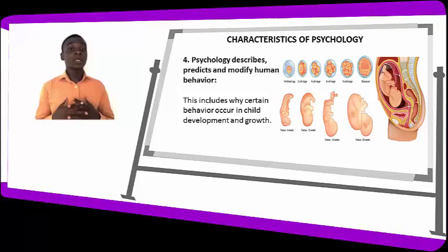We can say that there is a pattern of child growth. A child grows from conception, then after the mother delivers, we have the early childhood stage, the late childhood stage, adolescence, and adulthood. We can predict human behavior — at birth the child takes breast milk, then as it crawls it starts adapting to other food. We can predict the kind of training to give the child and the kind of learning needed to develop the mental capacity of the child at each stage.